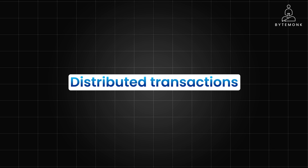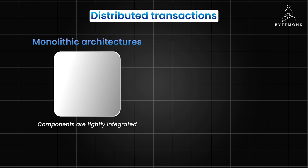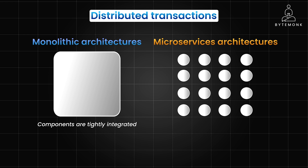Distributed transactions aim to solve this by treating a group of operations as a single unit of work, ensuring either all operations succeed or none do. In monolithic architectures, where all components are tightly integrated, transactions are relatively straightforward — a single database ensures data consistency. However, in microservices architecture, where applications are decomposed into loosely coupled services, each with its own database, ensuring consistency becomes more complex.